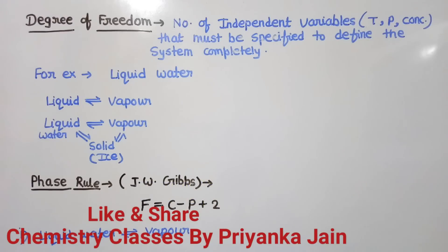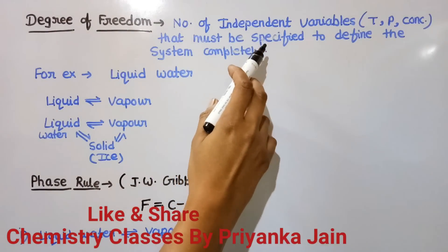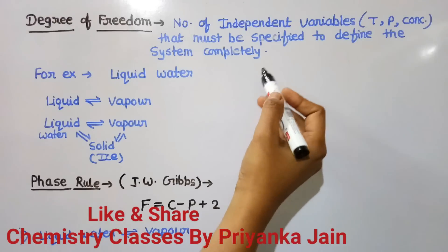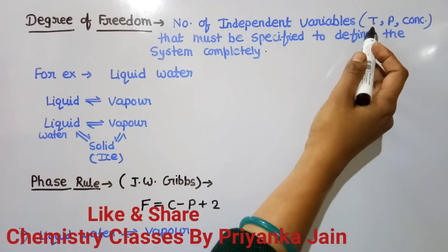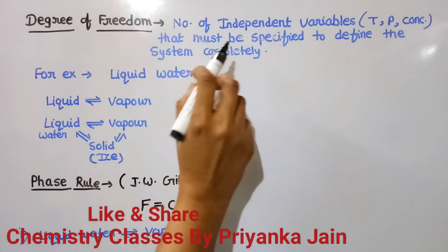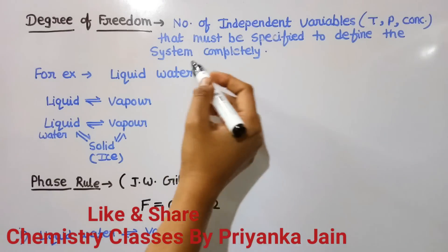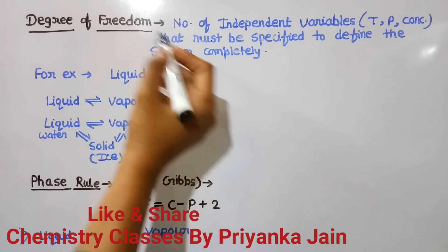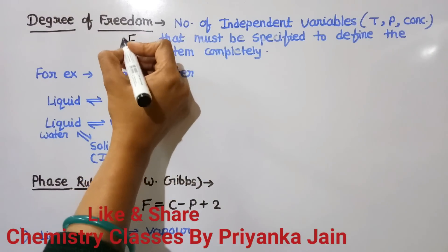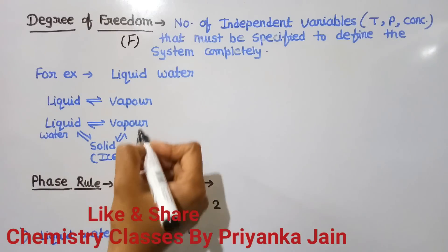The next important point is the degree of freedom. The degree of freedom is the number of independent variables — such as temperature, pressure, or concentration of a reactant — that must be specified to completely define the system. It is denoted by F. We can understand it with the help of an example.